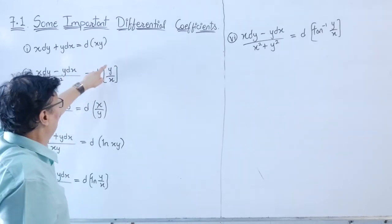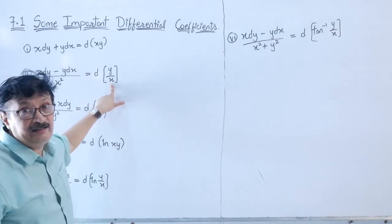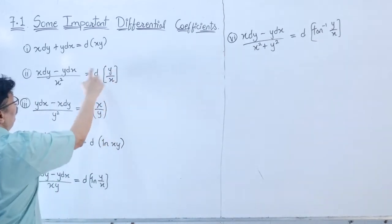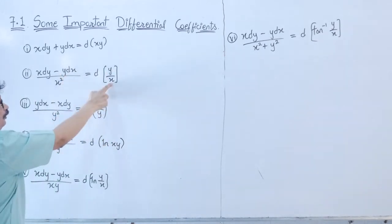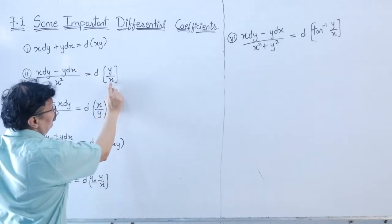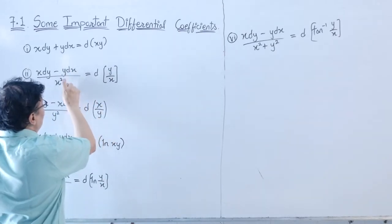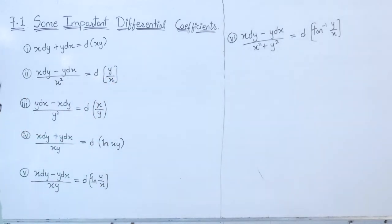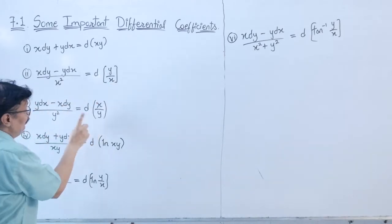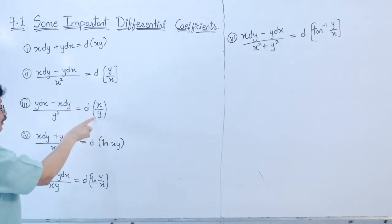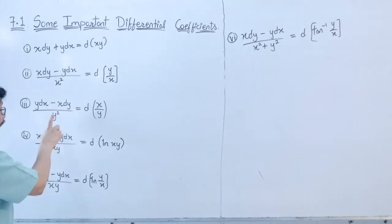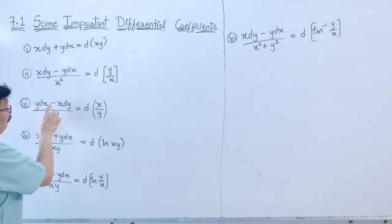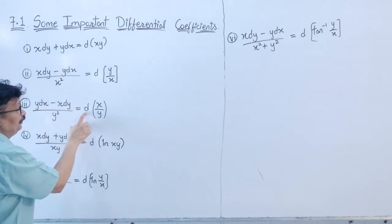Second formula: x·dy − y·dx divided by x² equals d(y/x). This comes from the quotient rule. If x² is in the denominator, the differential is d(y/x). Correspondingly, y·dx − x·dy divided by y² equals d(x/y).